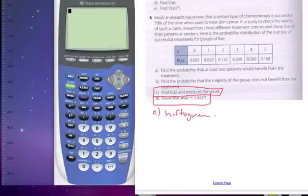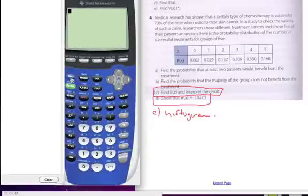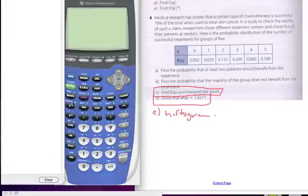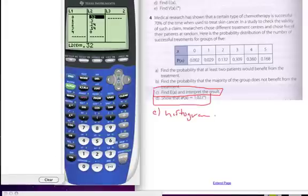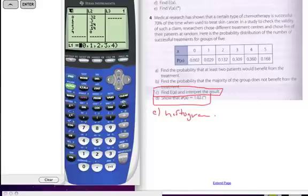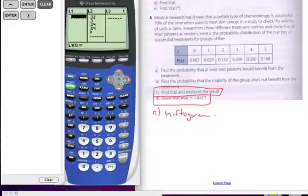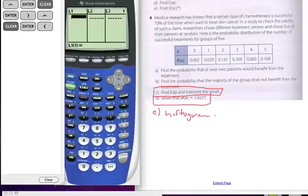So to find the expected value, I'm going to go to my calculator. I'll clear this list. So I go stat, I'm going to edit, and I'm going to go on top of this list. I'm going to clear what's there. Go on top of L1, hit enter, or clear and enter. Go on top of L2, clear and enter. If I would hit delete, the whole list would go away.